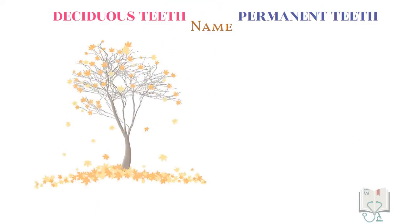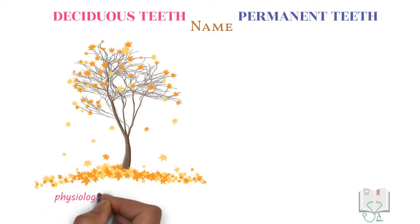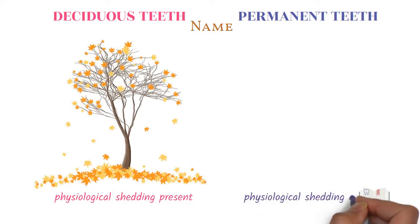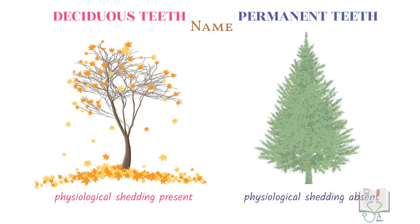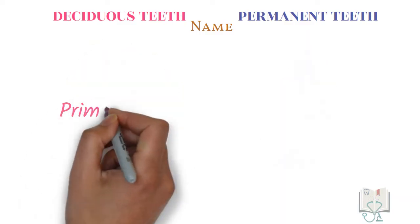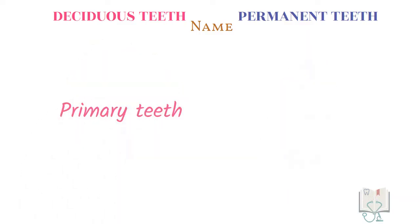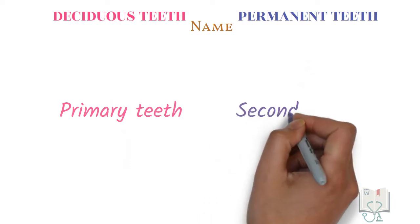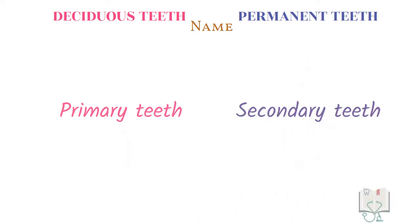The name deciduous signifies their physiological shedding, whereas in permanent teeth there is no physiological shedding and hence the term permanent. Deciduous teeth are also called primary teeth as they erupt first, and permanent teeth are also called secondary teeth as they erupt later.